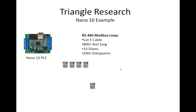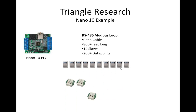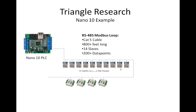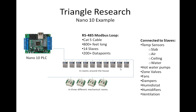The way we're using the Nano 10 is that all of our sensors and output devices are all on a slave network. It's on an RS-485 Modbus loop, which is about 800 feet long. We have 10 thermostats throughout the house, in the bedrooms and living rooms in different areas. We also have four input-output devices located in several different mechanical rooms. The thermostats have things like temperature sensors — sensing the slab temperature, air temperatures, and ceiling temperatures.